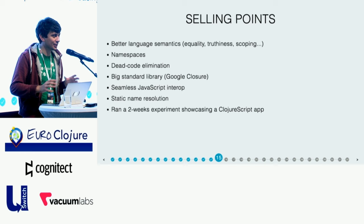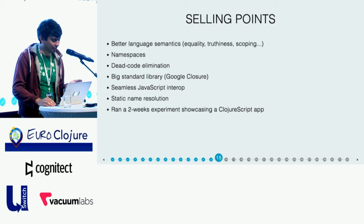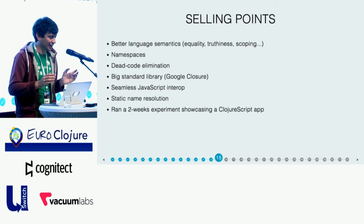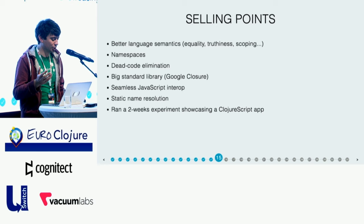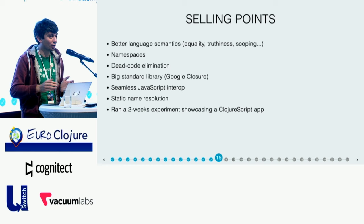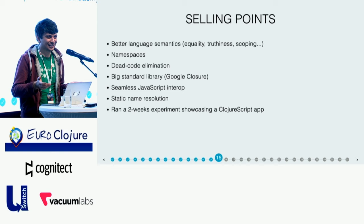ClojureScript also provides namespacing. If you worked with a big enough code base, you know that namespacing and modularity is extremely important, and it's not something you get out of the box from JavaScript. You get dead code elimination and a big standard library, all thanks to the Google Closure compiler — like batteries included from the very beginning. On top of that, it was a fairly safe bet since ClojureScript offers seamless JavaScript interop. You could use any existing JavaScript library from ClojureScript, which felt like an escape hatch in the worst case. And one really useful thing with ClojureScript is static name resolution — if you can, at compile time, find out if a variable is defined or not, once you've felt that power it's very hard to go away from it.